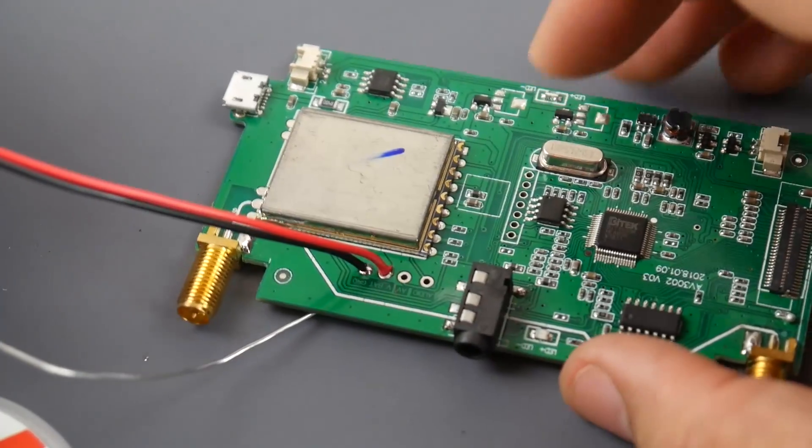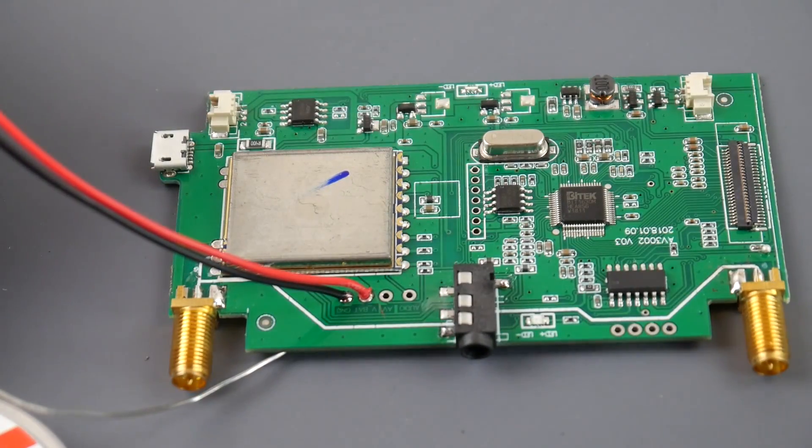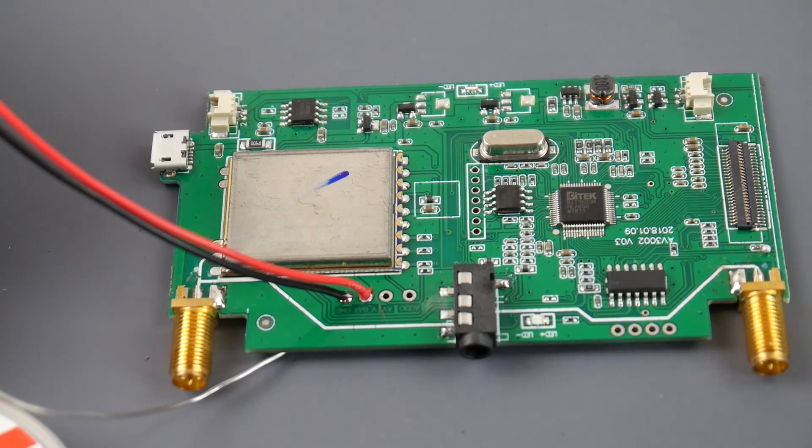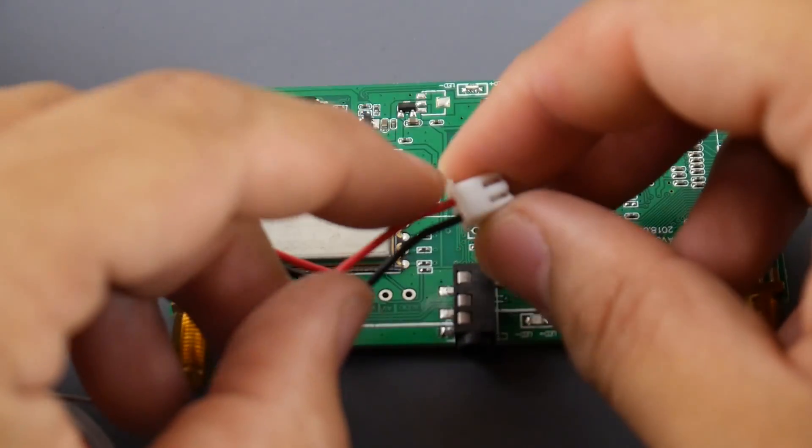So now I've gone ahead and soldered the ground and the VBAT. Now, what's so cool about these pads here is that when you boot up the goggle, they provide power. So we're not going to need that switch that I mentioned in the beginning of the video, which is really nice.